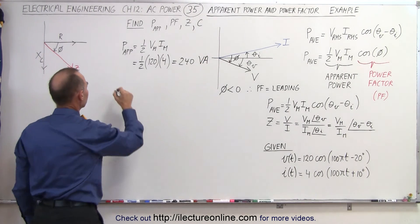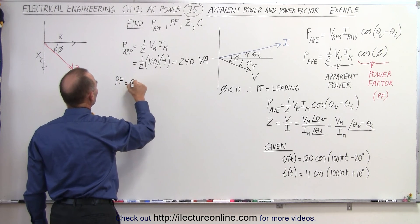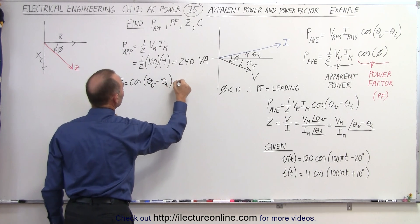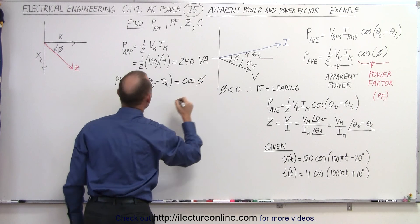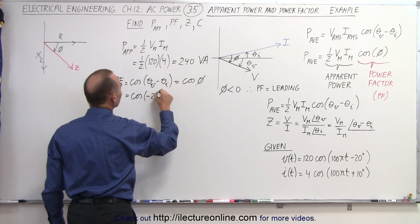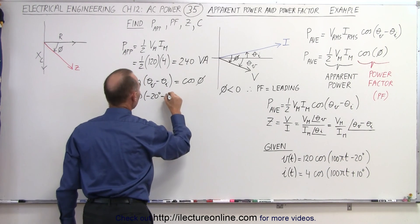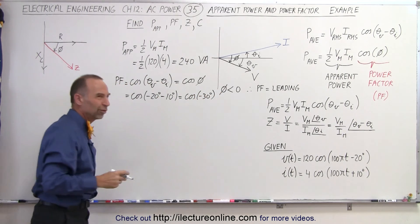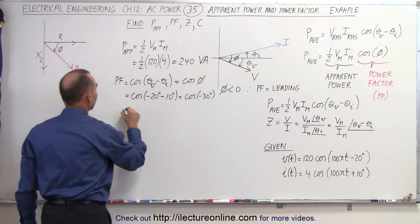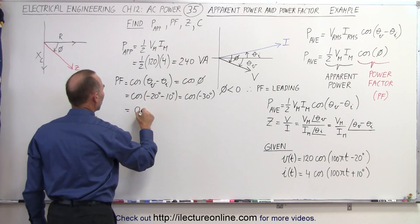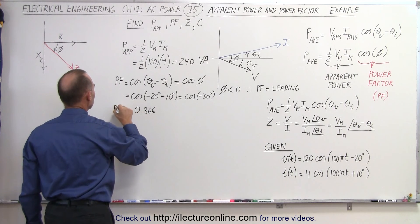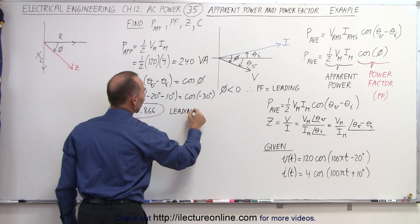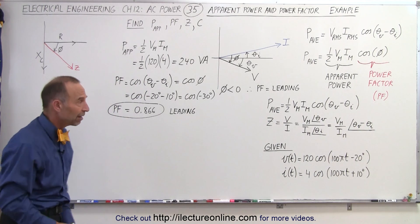Next, we find the power factor, which equals the cosine of the difference of the phase angles of voltage and current — that is, cos(φ). This gives us cos(−20° − 10°) = cos(−30°) = √3/2 ≈ 0.866. Again, this is a leading power factor because we have a negative phase angle, meaning the current leads the voltage.